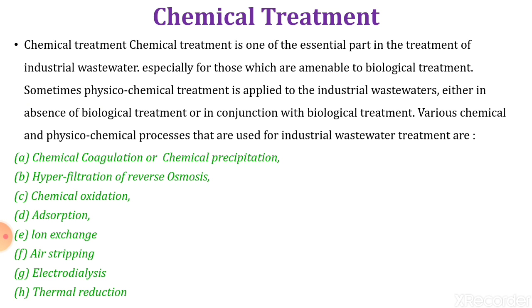Various chemical and physico-chemical processes used for industrial wastewater treatment are: chemical coagulation or precipitation, hyperfiltration or reverse osmosis, chemical oxidation, adsorption, ion exchange, air stripping, electrolysis, and thermal reduction.